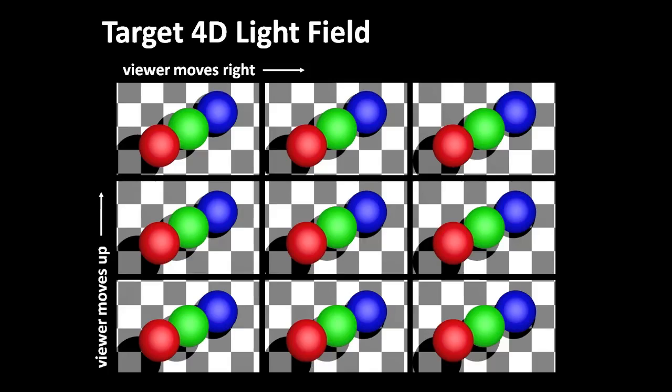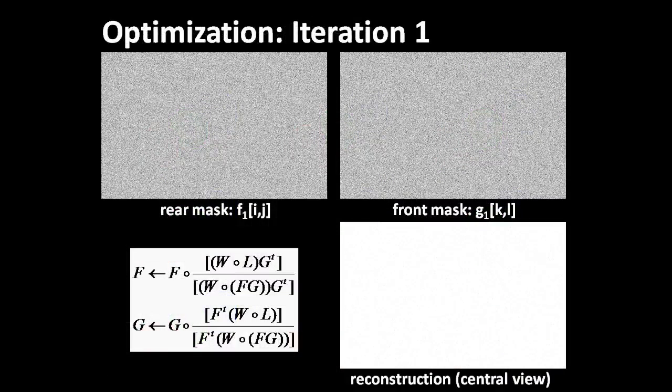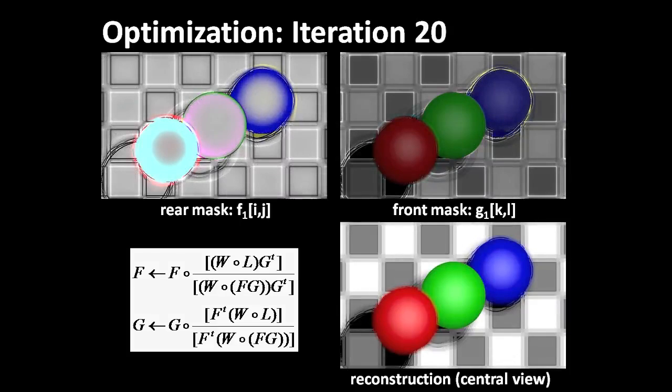We solve this optimization problem using a non-negative matrix factorization. Here, we show the intermediate optimization results. Note that smooth masks are obtained following the procedure described in Figure 11 from our paper.